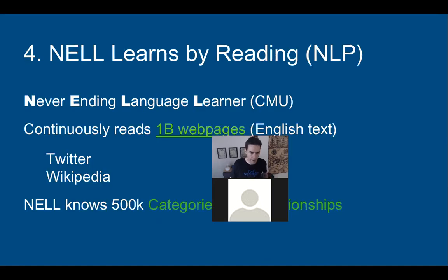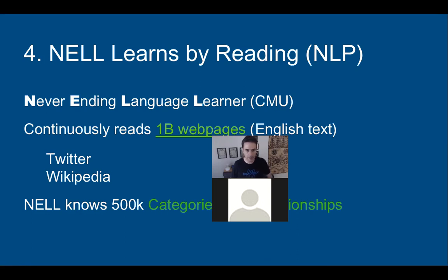Never Ending Language Learning learns by reading, using natural language processing from the web — it's extracting this knowledge for the knowledge base from the web. They've been doing this for almost 10 years now at Carnegie Mellon and it's been able to build a very large knowledge base. It knows around 500,000 kinds of categories — like a cat is an animal — and also relationships between things. It's open source and available to anyone, and you can actually help train it on Twitter by telling it when it's wrong about a particular piece of information it's extracted from the web.